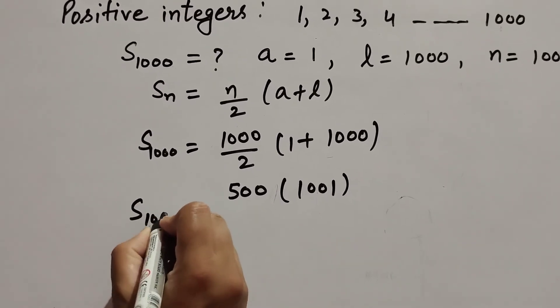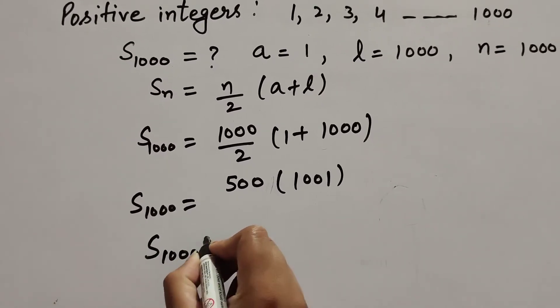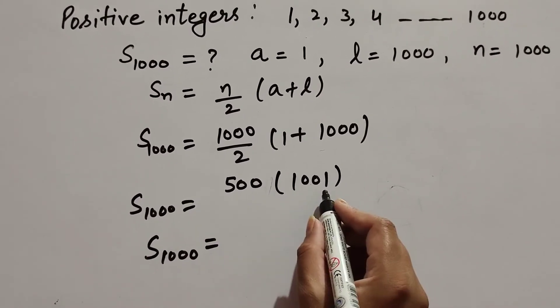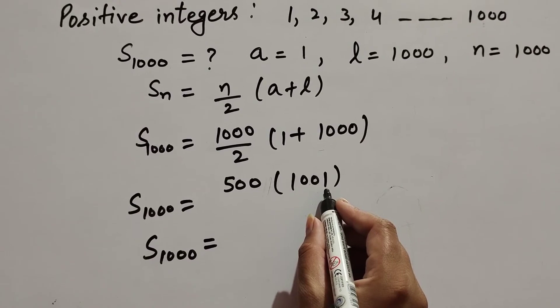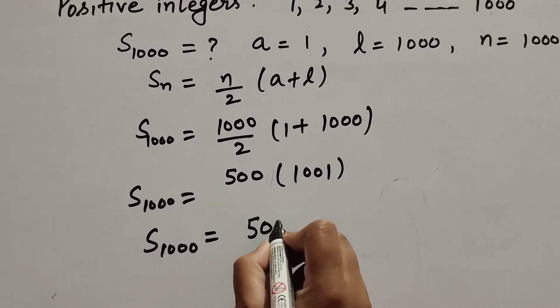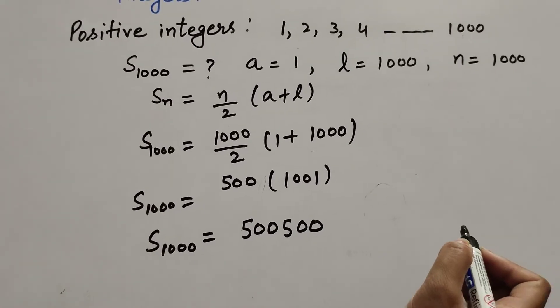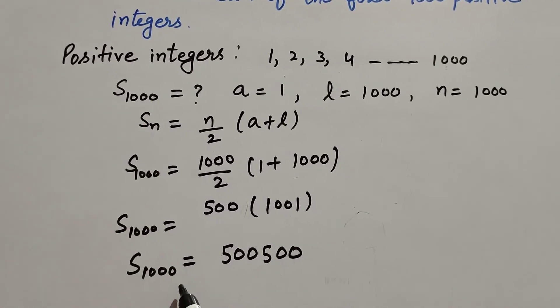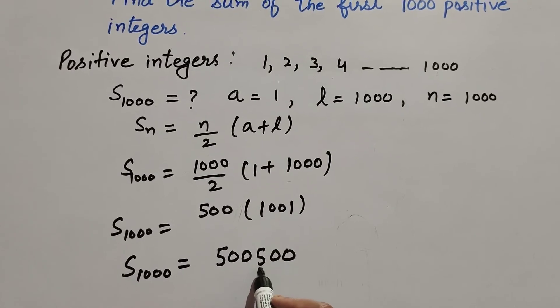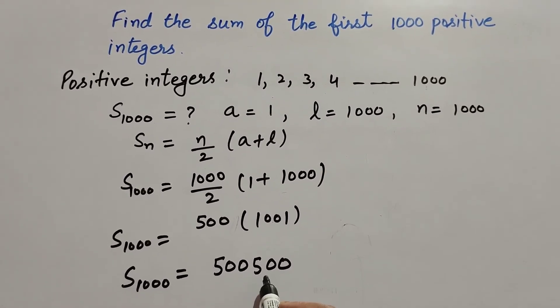Sum of thousand terms, equal to 500 multiplied by 1001. We get the answer 500,500. Sum of thousand terms, equal to 500,500.